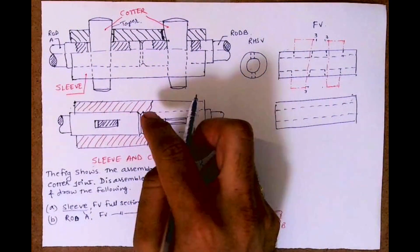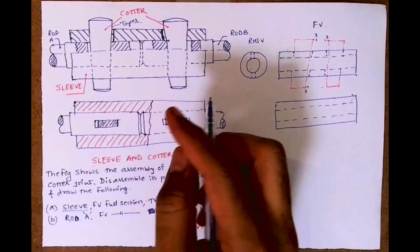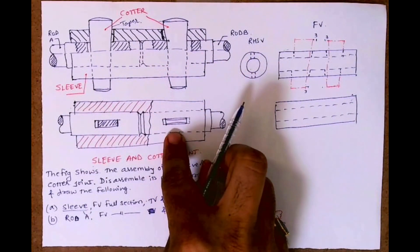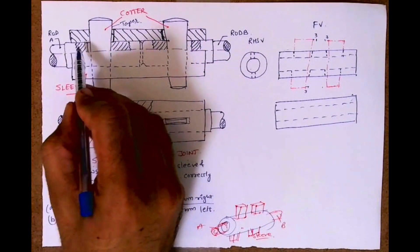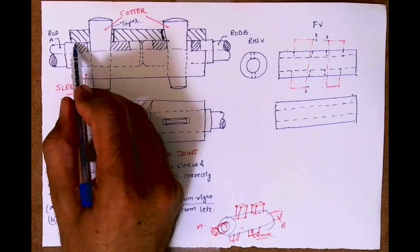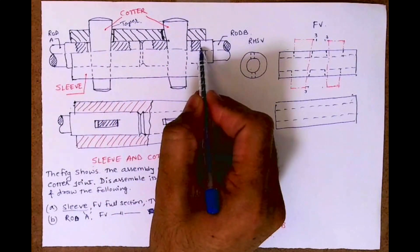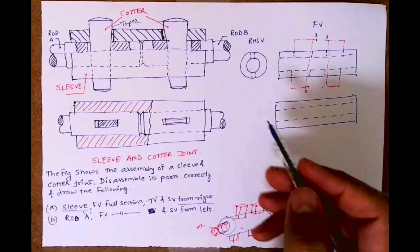It will be dotted. See, this is partial section. That's why I've shown one part in section, one part without section, so you can see in detail. Here also I have done partial section. I can do full section, but I have done it like this so I can save some time.